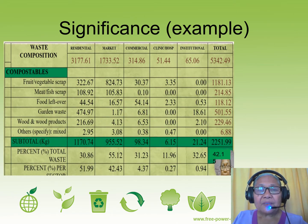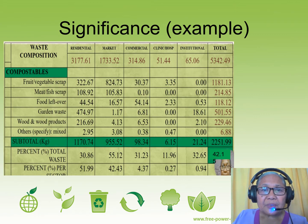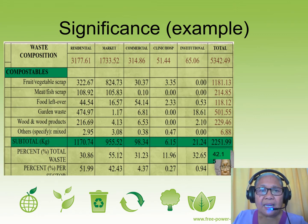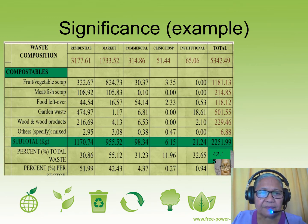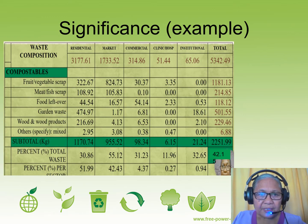Here we have an example of WACs data. You will see in the table the total for each subtype of compostables and the total and percentage contribution of each waste source. From the data, you will see that the garden waste and the fruit and vegetable scrap comprise the bulk of the compostables — fruit and vegetable scrap is the most abundant, followed by garden waste, while the least is the mixed compostables.